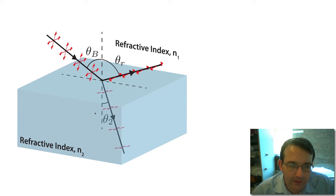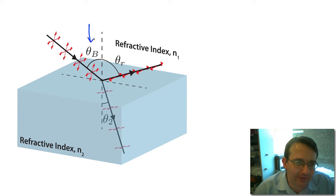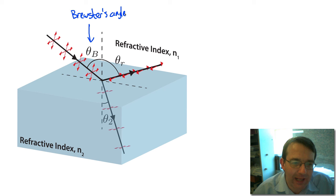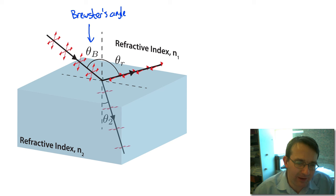To understand this more and show how to calculate Brewster's angle, let's look at some diagrams. Here we have the light coming in at an angle of incidence — which is Brewster's angle. We get a reflected beam that is perfectly polarized, and the refracted beam is partially polarized, because part of that polarization state has been reflected.